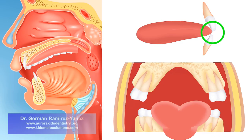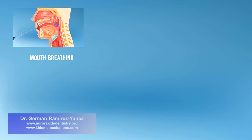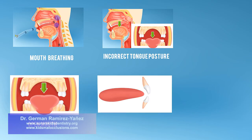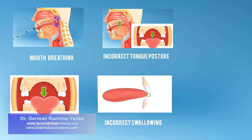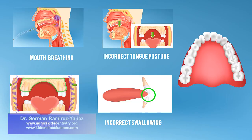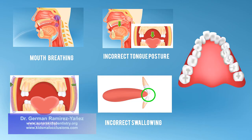That pushes your front teeth to show out of your mouth, with the tongue resting on the floor of your mouth and its tip between your front teeth. That is called an open bite, as your upper and lower front teeth do not touch when you close your mouth. All those dysfunctions — mouth breathing, incorrect tongue posture, open mouth, and incorrect swallowing — are going to continue affecting the growth and development of your upper and lower jaws. As a consequence, there is less room for your teeth, and they become crooked.